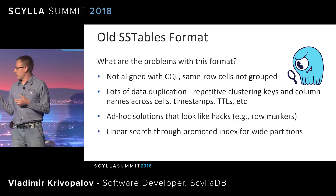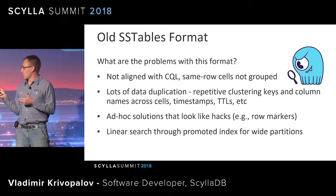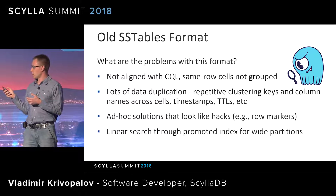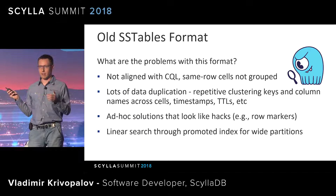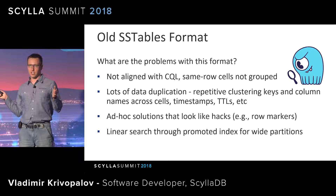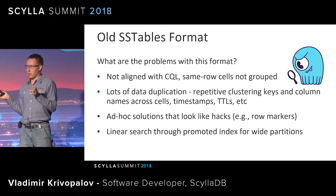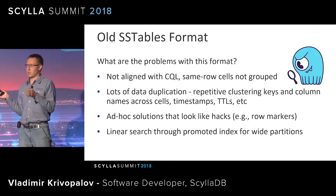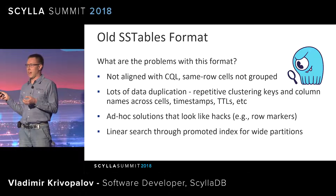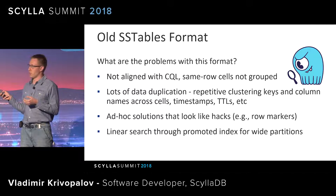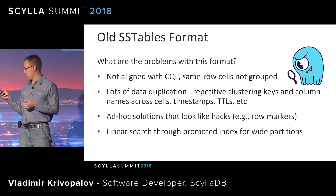One more issue: the old format only supported linear search through the promoted index within a partition. If you have a huge partition occupying gigabytes of disk space and need to find a small subset, you have to parse the promoted index linearly, consuming it all until you hit the position you need to read from in the data file.